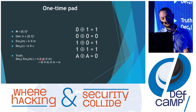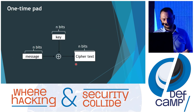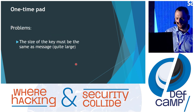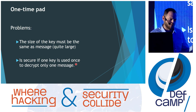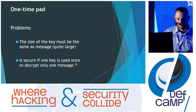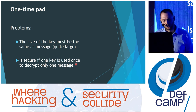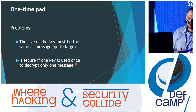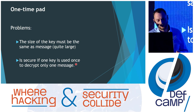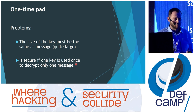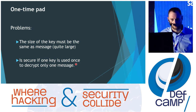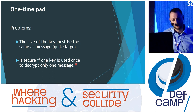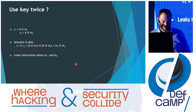Key XOR key gives zero and we are left with the message. It is illustrated how it works: n-bit key, n-bit message, and we get an n-bit ciphertext. Why is it so good, and why is it not used in practice? It was used, for example, for the phone line between Washington DC and Moscow, but now it's not used in practice because the size of the key must be really big — it must be the same size as the message. Also, it's a one-time key, meaning it's secure only if we use the key once.